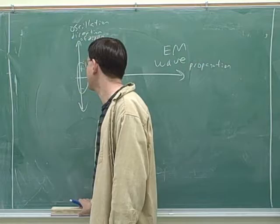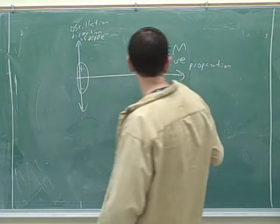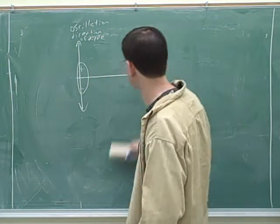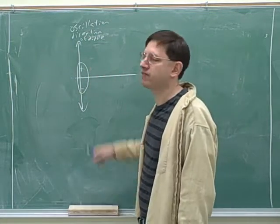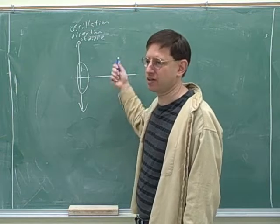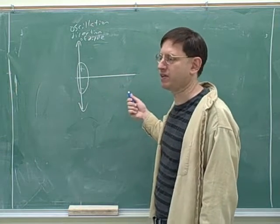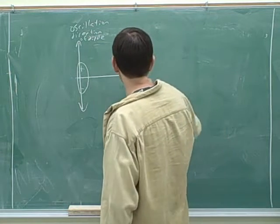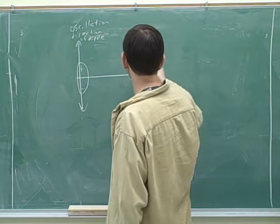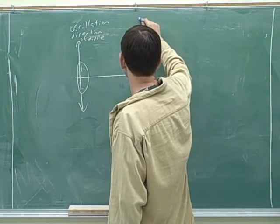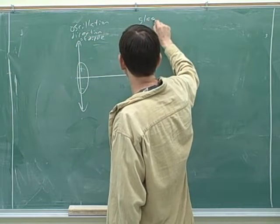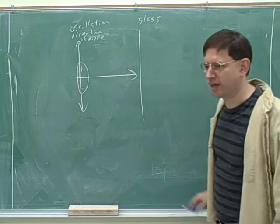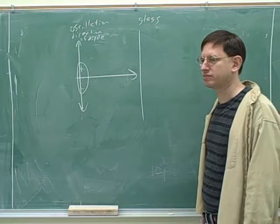Now let's think about how the waves propagate in material. We already saw how they can propagate even in a vacuum, because the waves just feed on each other. But let's say the wave gets into a material medium — say it gets into glass, because we know that light moves through glass.